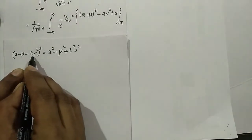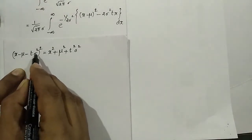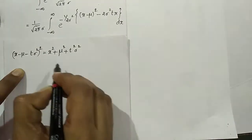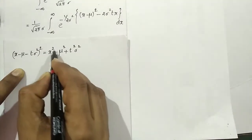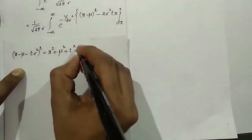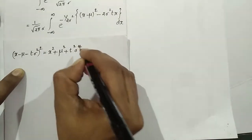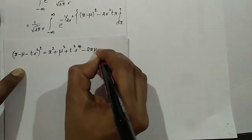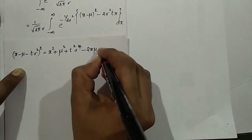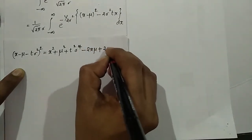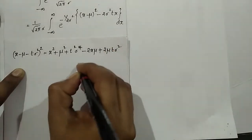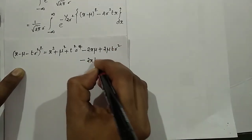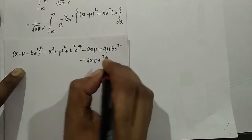Expanding the exponent, we get: x squared plus mu squared plus t squared sigma to the 4th minus 2x mu plus 2 mu t sigma squared minus 2xt sigma squared.